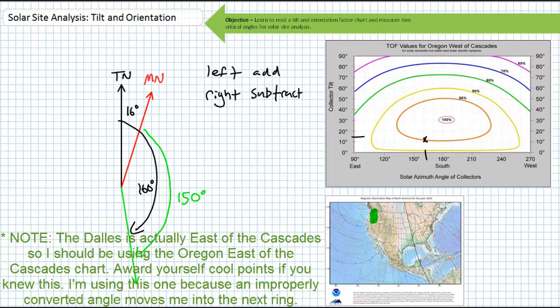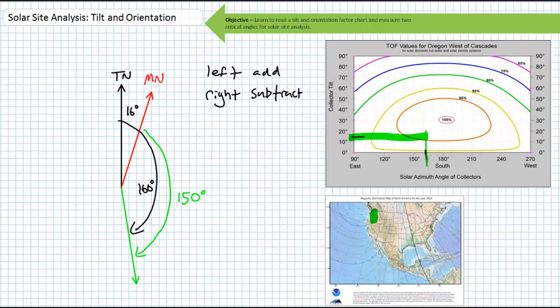If I had a 3/12 pitch roof with a tilt angle of 14 degrees, I would be well inside the 95 percent TOF ring. If I failed to convert orientation with reference to true north, I'd be dangerously close to falling out of the 95 percent TOF ring. Worse yet, if I converted absolutely wrong and accidentally subtracted 16 instead of adding 16, I'd be totally outside the 95 percent ring.